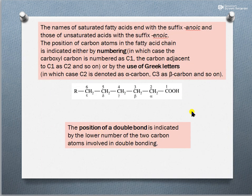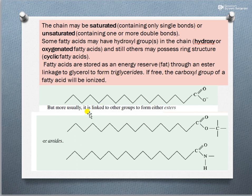In the naming of fatty acids, numbering starts from the COOH group: 1, 2, 3, 4, and so on. The terms alpha, beta, gamma, delta, and epsilon are given to the carbon atoms further along the chain. If the fatty acid is saturated, it will have the suffix -anoic acid; if it is unsaturated, it will be known as -enoic acid. The position of the double bond is indicated by the lower number of the two carbon atoms involved in the double bond. Fatty acids can also occur as esters when linked with alcohols, or as amides — where an NH group is present after the carbonyl.